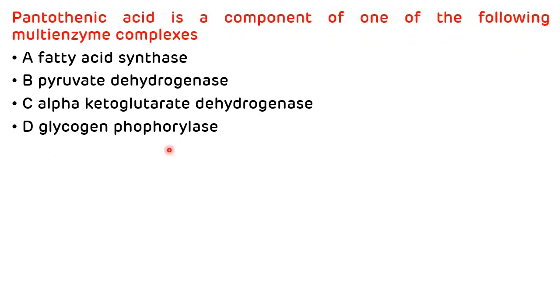Second and last question is: pantothenic acid is a component of one of the following multi-enzyme complexes, and the options are fatty acid synthase, pyruvate dehydrogenase, alpha-ketoglutarate dehydrogenase, and glycogen phosphorylase. We have already discussed that phosphopantetheine, which is an intermediate of coenzyme A synthesis, is a component of the multi-enzyme complex of fatty acid biosynthesis, that is fatty acid synthase. So the correct answer is A.